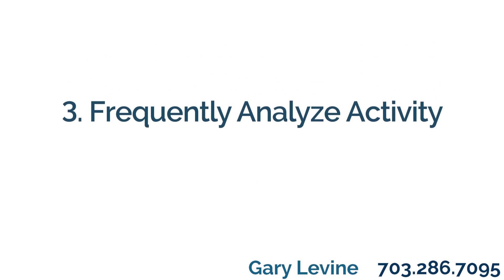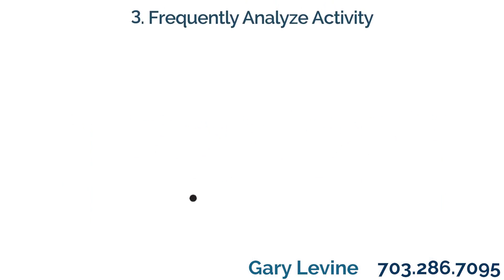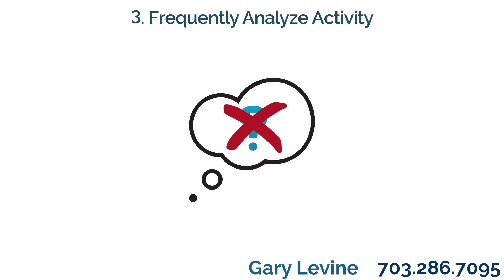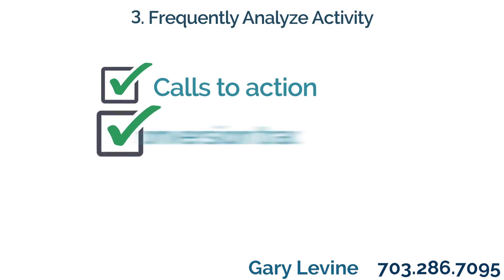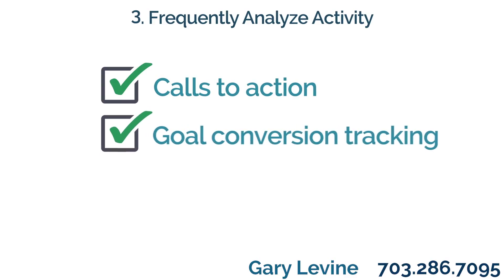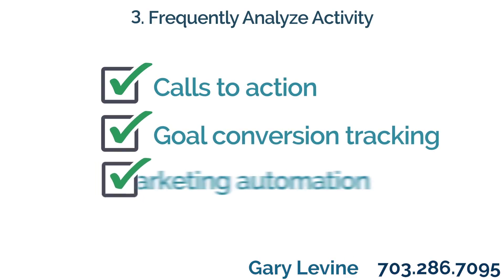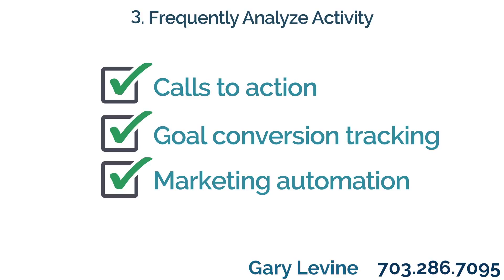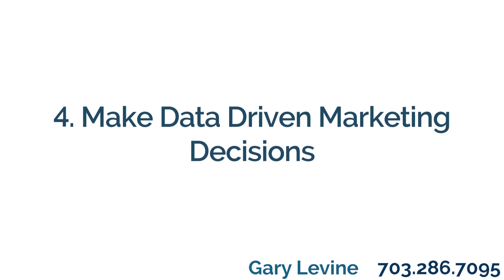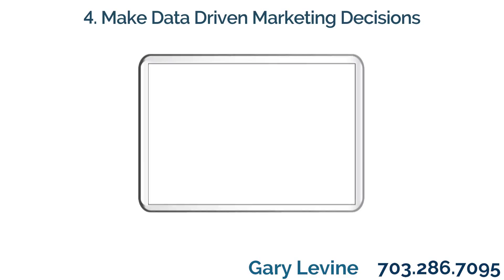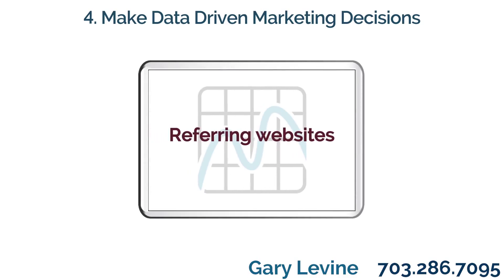Three: Frequently analyze activity. This is where you can remove the need for guesswork. Setting up your calls to action and goal conversion tracking correctly in your analytics or marketing automation tools will mean you can find out in real time how well or poorly your campaigns are performing.